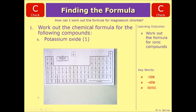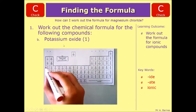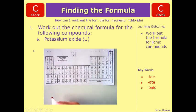On to question 2, potassium oxide. So again, potassium, you know, is in group 1. If it's in group 1, it becomes plus. And oxygen is in group 6. So that becomes O2-.